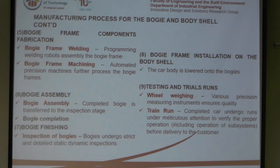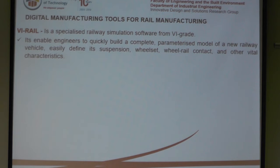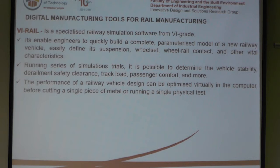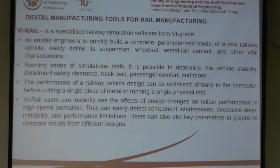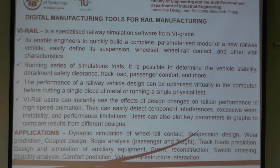One digital manufacturing tool for rail manufacturing is VI Rail — a specialized railway simulation software from V-Grade. It enables engineers to quickly build a complete parameterized model of a new railway vehicle, easily defining the suspension, wheel sets, and other components. You can run a series of simulation trials to see if your design will work before wasting money building a prototype. Users can instantly see the effect of design changes in rail car performance via high-speed animation, and detect component interference, excessive wear, instability, and performance limitations.